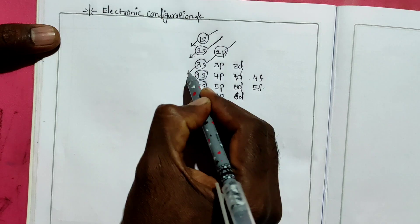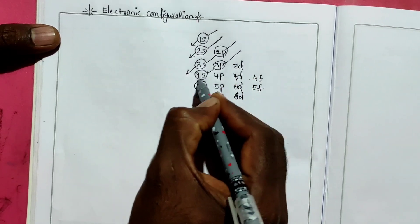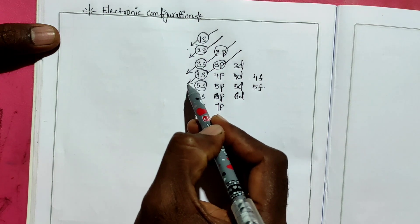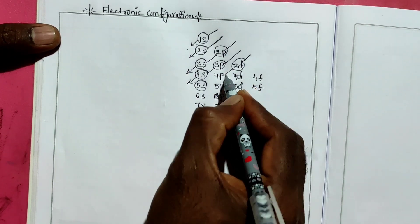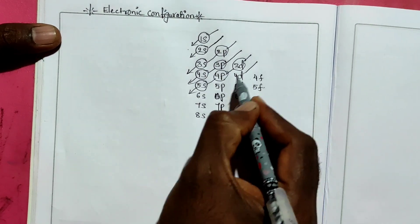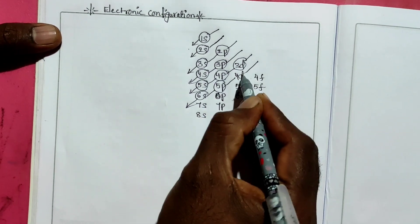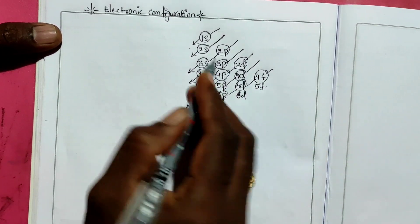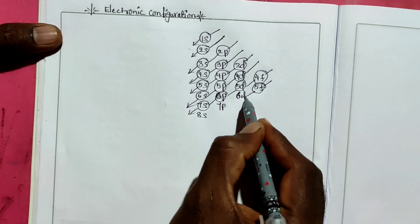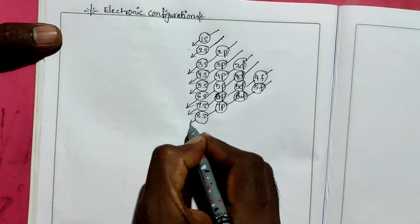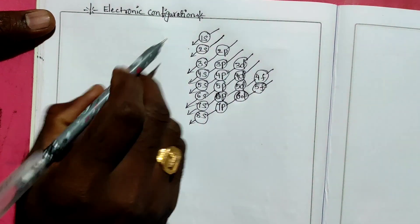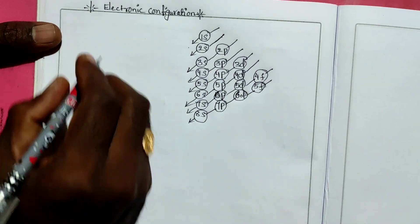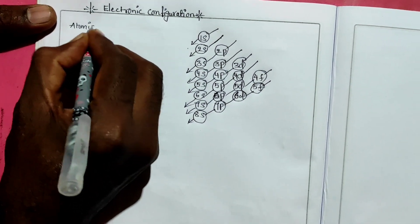Electrons are filled in this order: 1s, then 2s, then 2p, then 3s, then 3p, then 4s, then 3d, then 4p, then 5s — like this. We fill electrons into shells and subshells (s, p, d) in order of increasing energy. Less energy shells are filled first, then higher energy subshells.